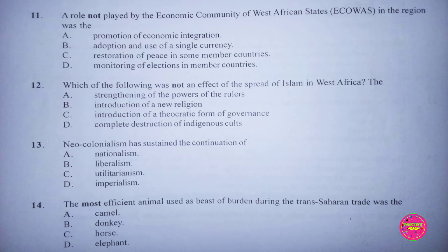Question 14. The most efficient animal used as a beast of burden during the Trans-Saharan trade was: A. Camel, B. Donkey, C. Horse, D. Elephant. The correct answer to this question is A. Camel.